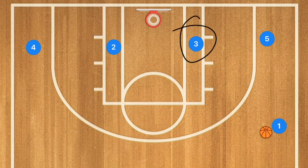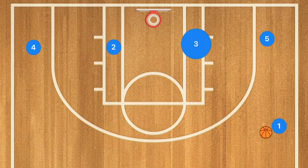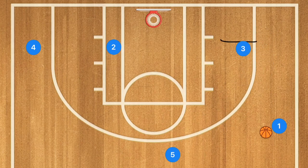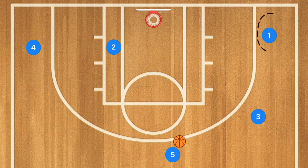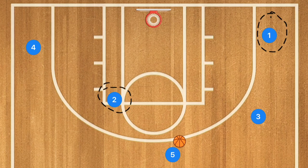In this second play, instead of setting up with our bigs in the post, we're going to set up with our smaller players in the post and our point guard up top. We'll have a screen for player five, who pops up to the perimeter where player one passes him the ball. Then player three goes up to the free throw line extended, player one goes down to the low corner, and player two pops up towards the elbow, trying to keep his defender behind him.